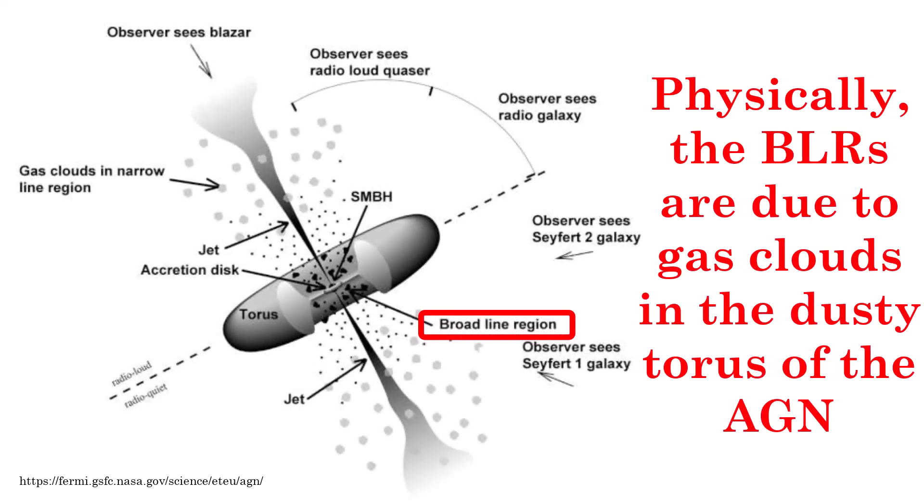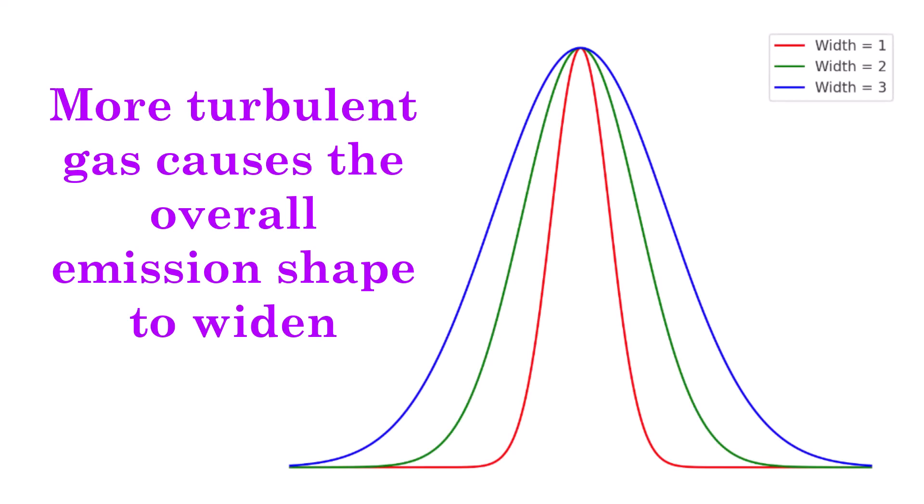The broad line regions originate from the gas around the supermassive black hole being highly turbulent and moving at great velocities. This causes the shape of the emission profile to widen due to additional Doppler broadening.